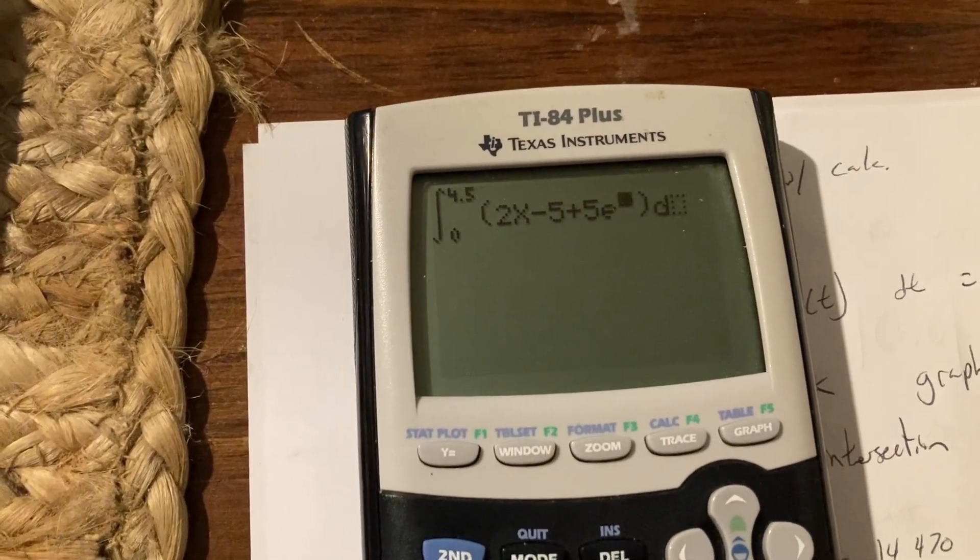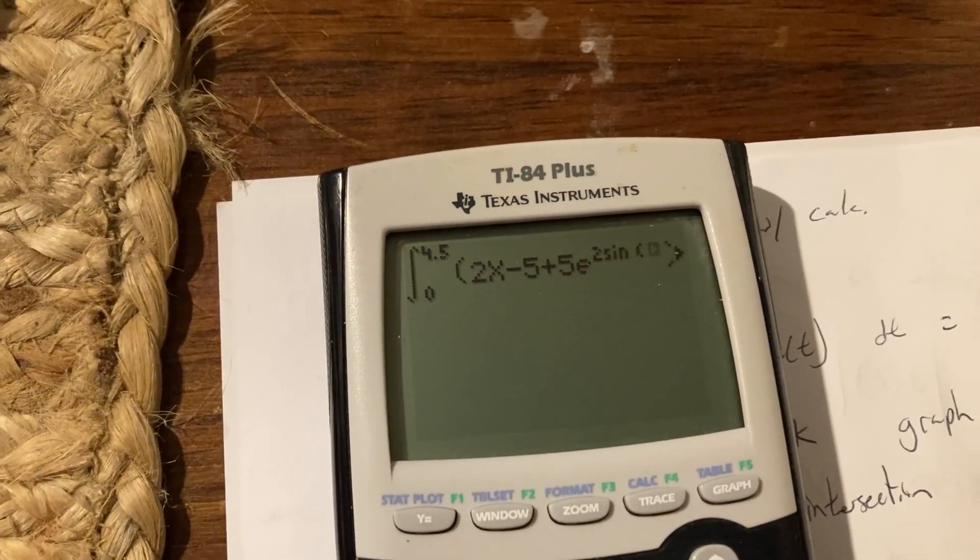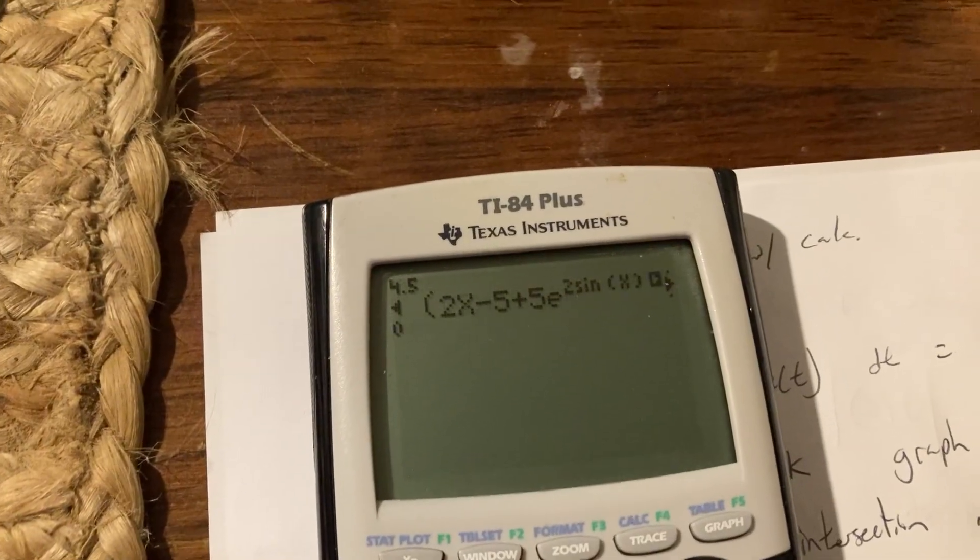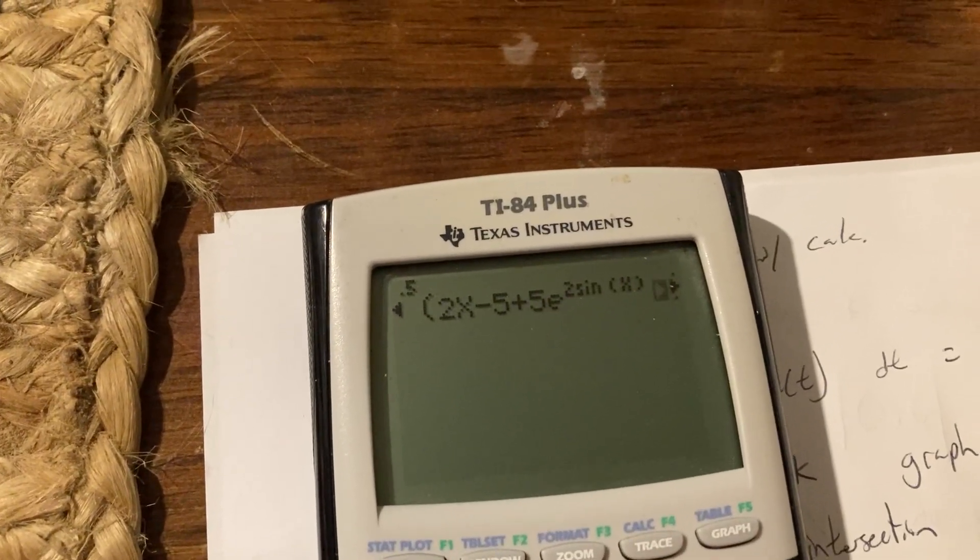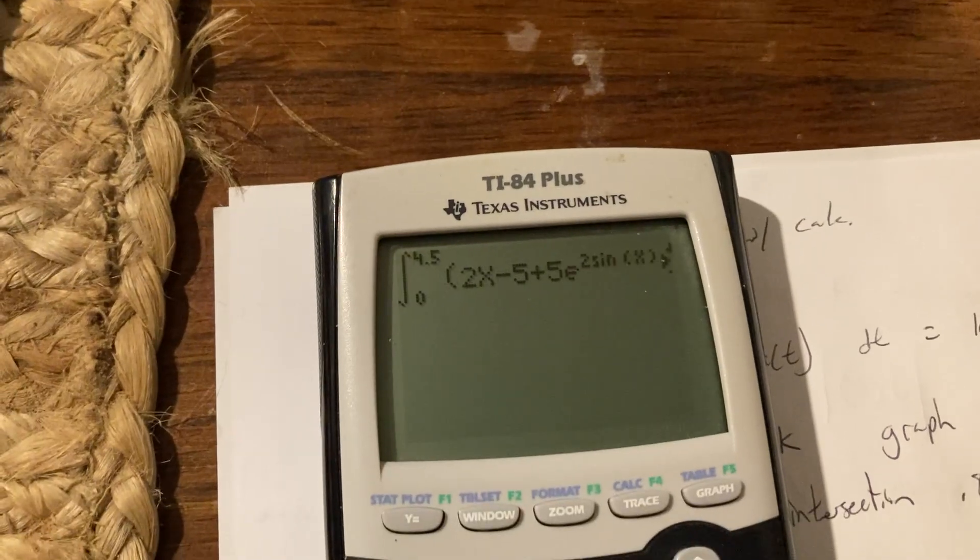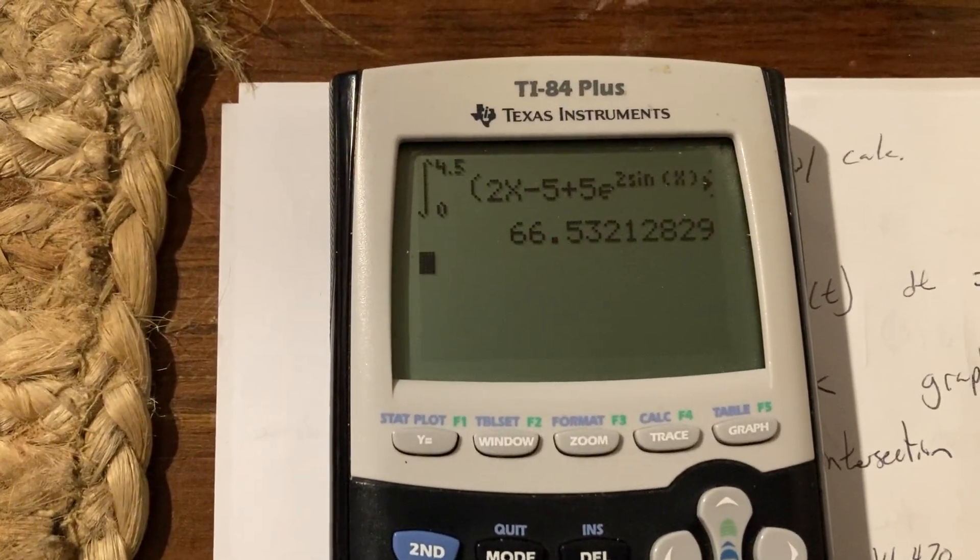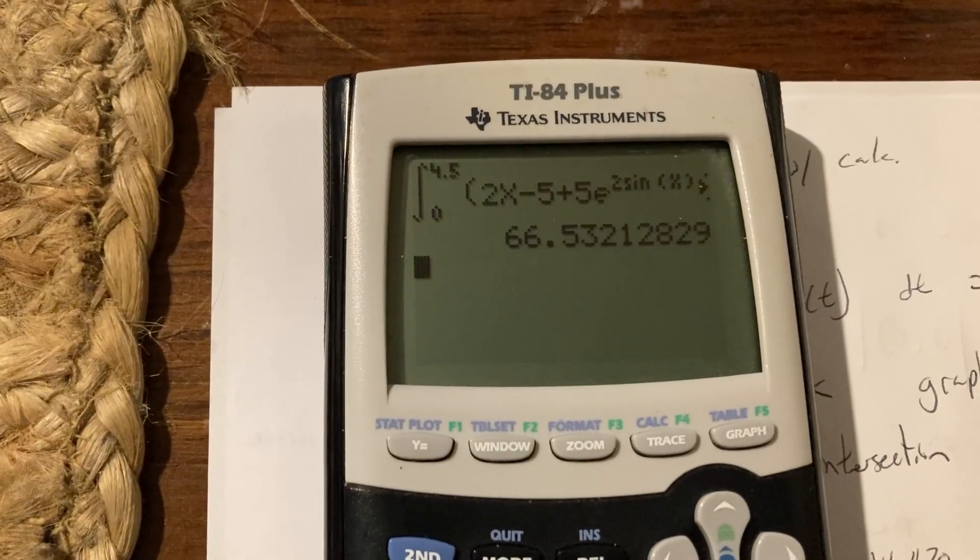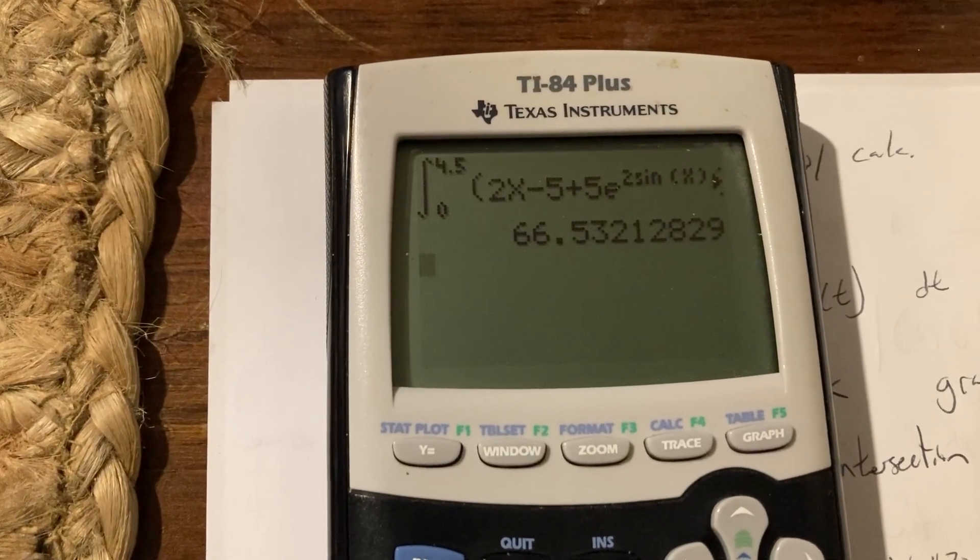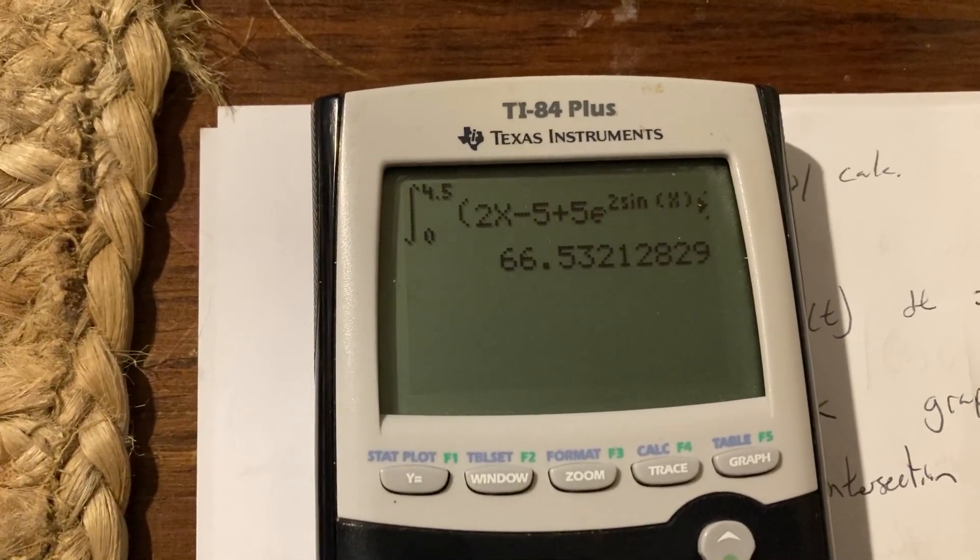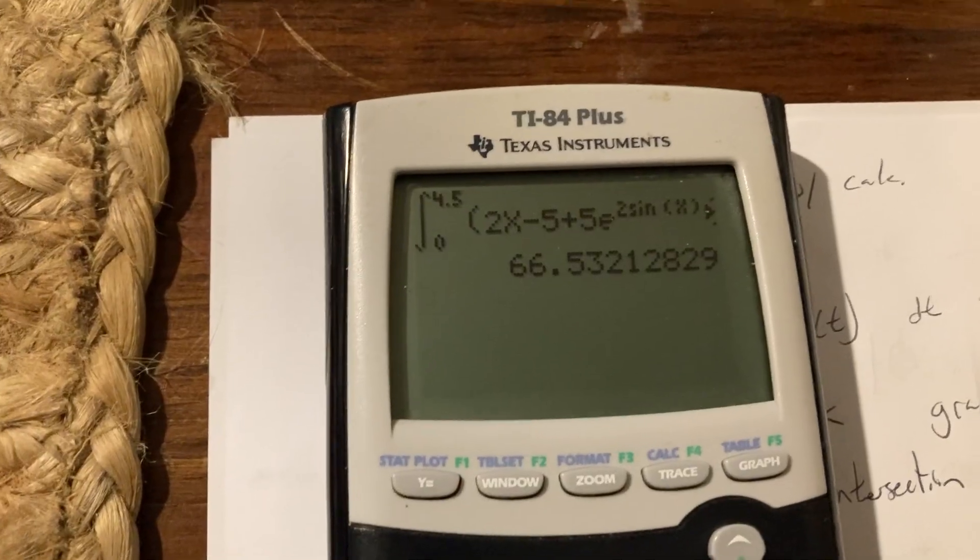e to the 2 sine t in our case x, and all that is with respect to x. We hit enter and we get 66.53 and that is the correct answer.